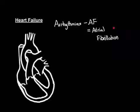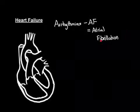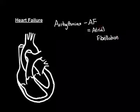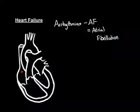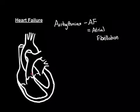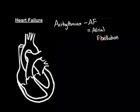Atrial fibrillation can precipitate heart failure — let me explain why. Normal electrical activity has an action potential generated in the sinoatrial node propagating across both atria and then down the atrioventricular node. In atrial fibrillation, everything goes totally chaotic. You get action potentials generated all over the place.